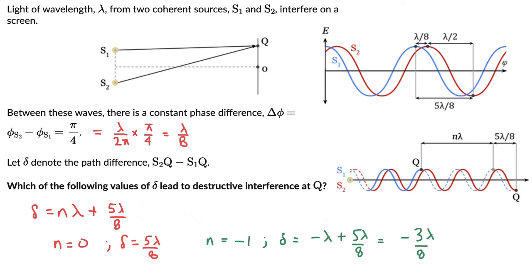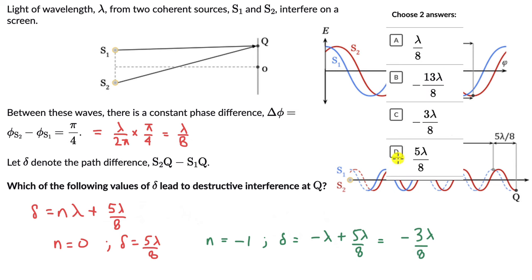Now let's have a look at the options. The options are, well, there is 5λ/8 and there is -3λ/8, so C and D are the correct options here.